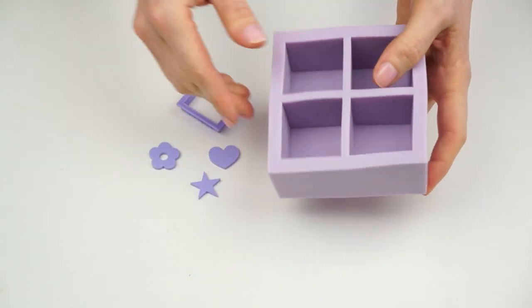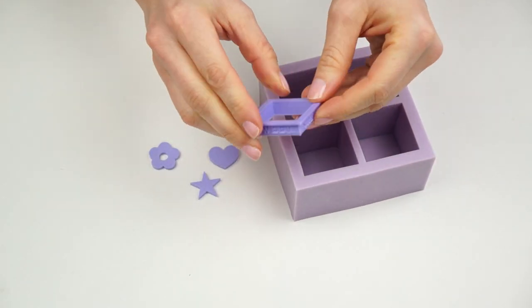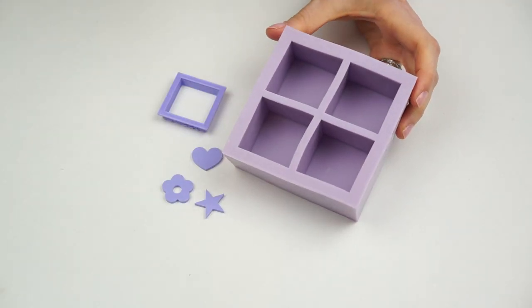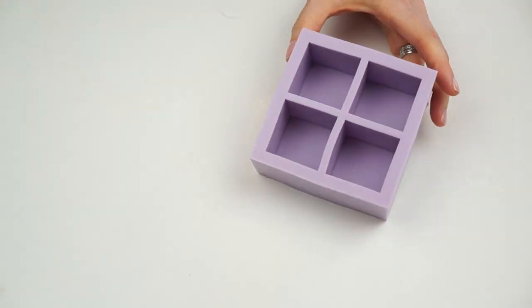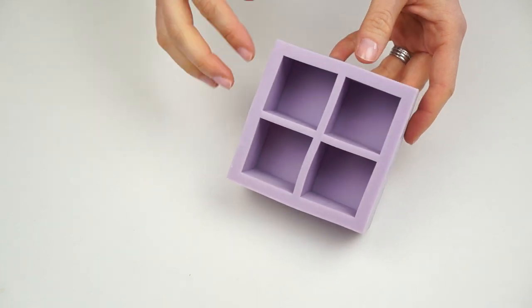So it just has four areas where we can make little cubes. It also comes with a little square cutter and also these additional shapes. Now I'm going to be showing you a few different styles but I'm going to start by making the blocks themselves by using this mold.